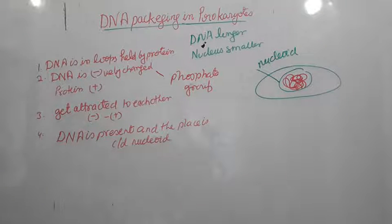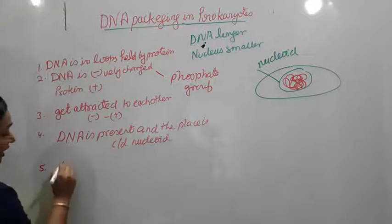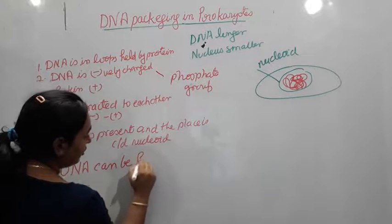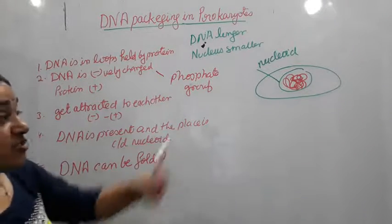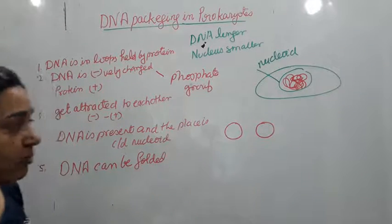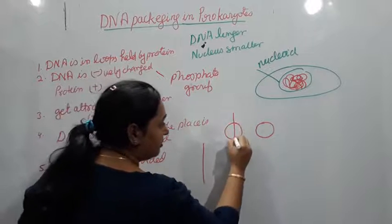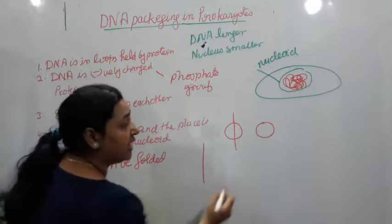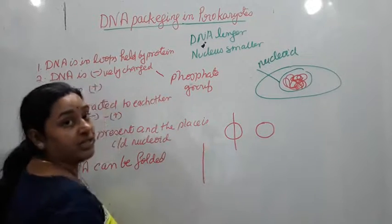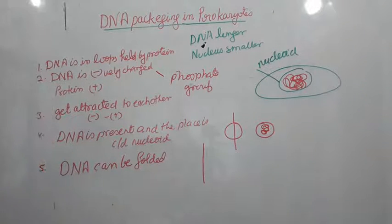If somebody asks what the nucleoid is, you can say it is the place where DNA is located inside the bacterial cell. Now, another important point: DNA can be folded. Let us understand with an example — you can see these two circles; both are the same size. But if you have to adjust a much longer thread inside one of them, it doesn't fit and comes out. Imagine this circle is the nucleus and the long thread is the DNA. The trick is you can fold the thread and adjust it inside. That is exactly how DNA is folded and adjusted in the nucleus.